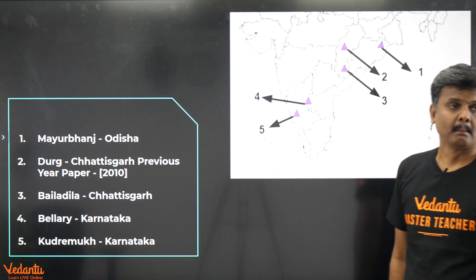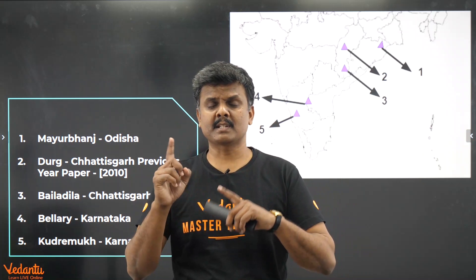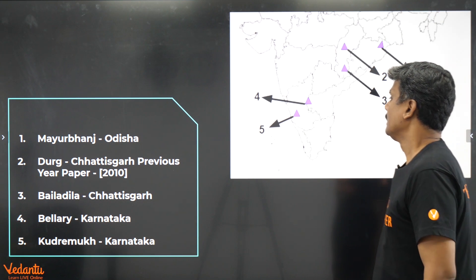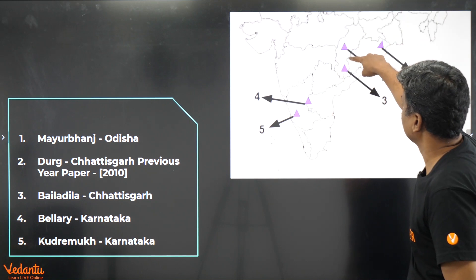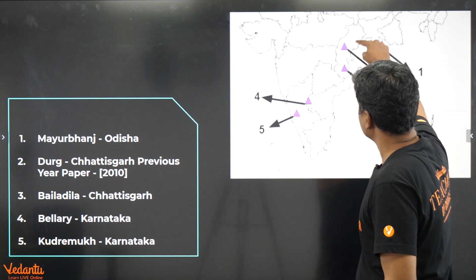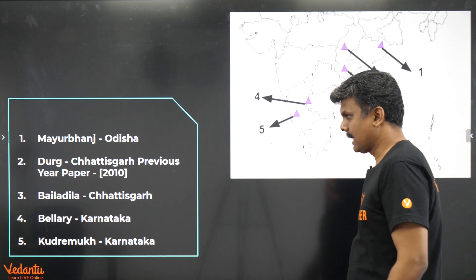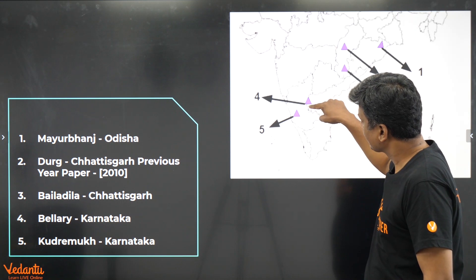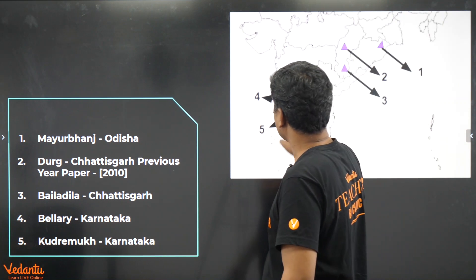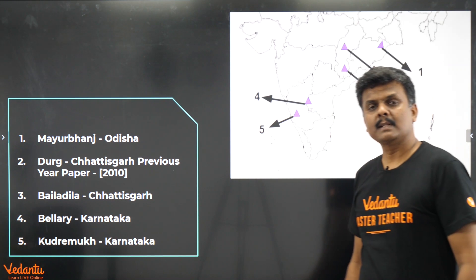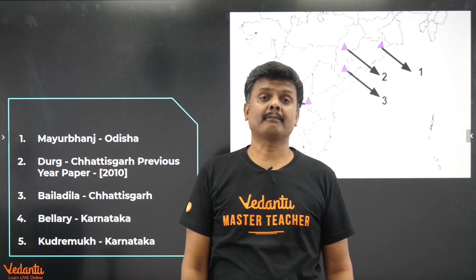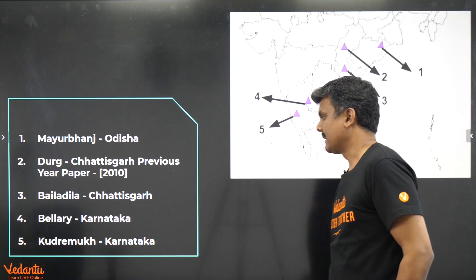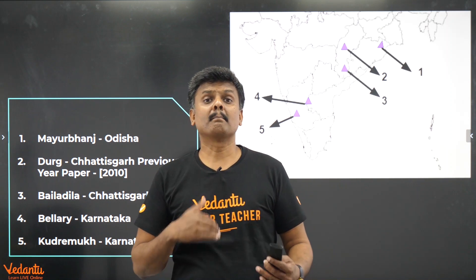The iron ore mines are: first, Mayurbhanj in Odisha; second, Durg in Chhattisgarh; third, Bailadila in Chhattisgarh; fourth, Bellary in Karnataka; and fifth, Kudremukh, also in Karnataka. So these are five places where iron ore mines are found.